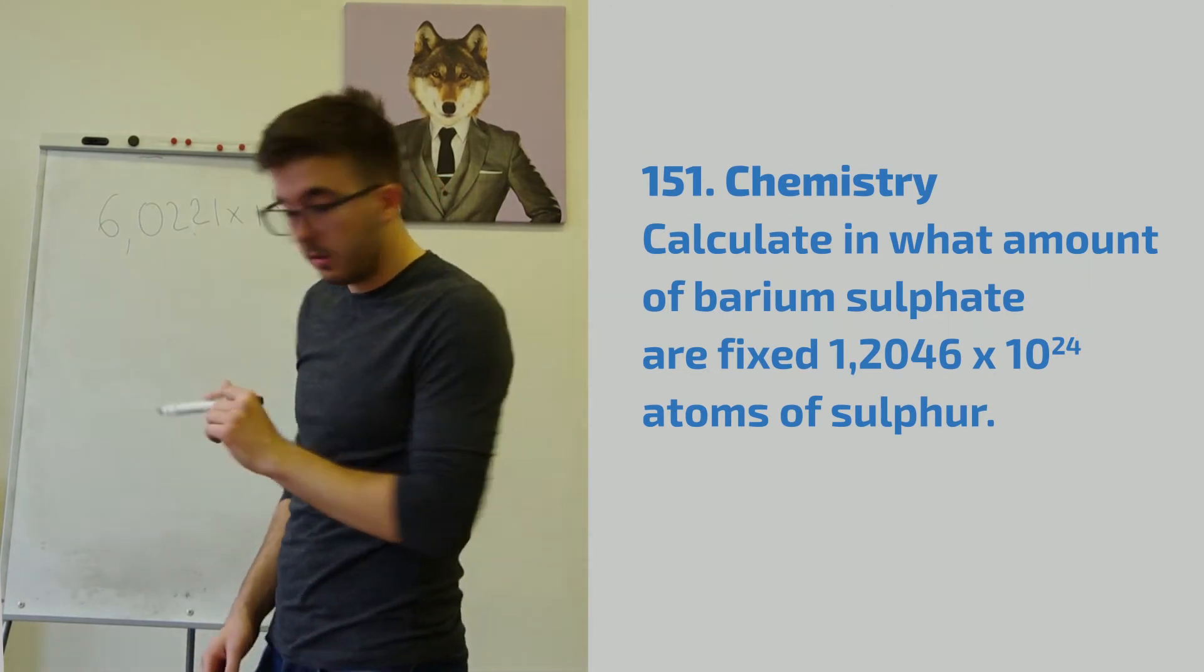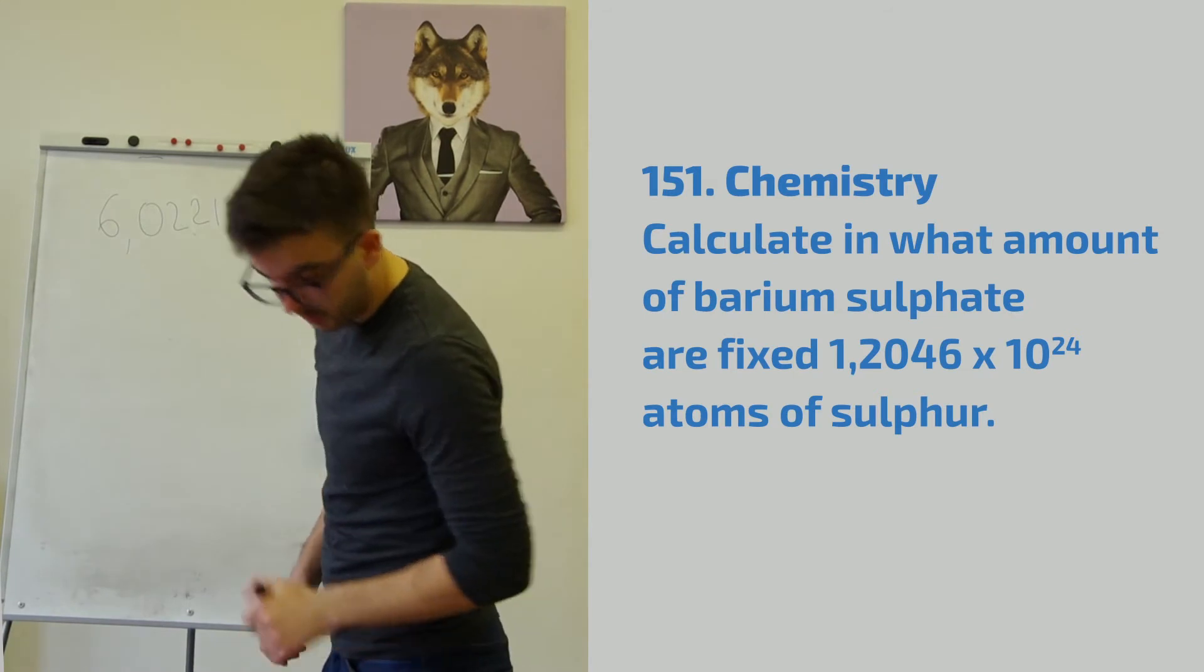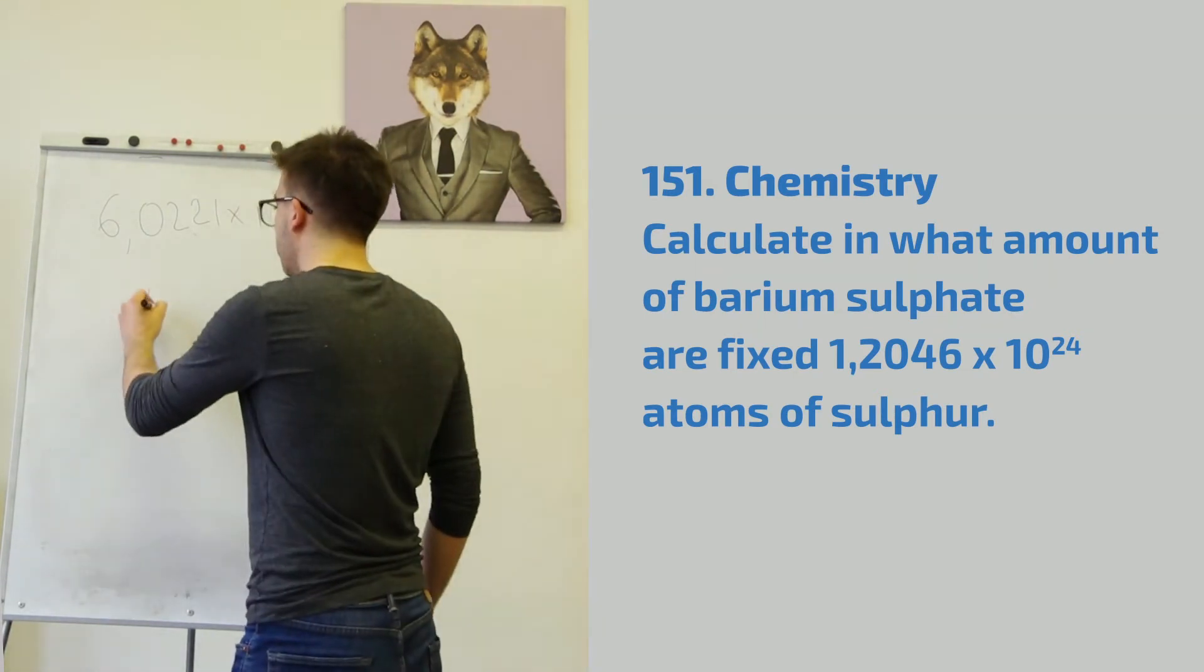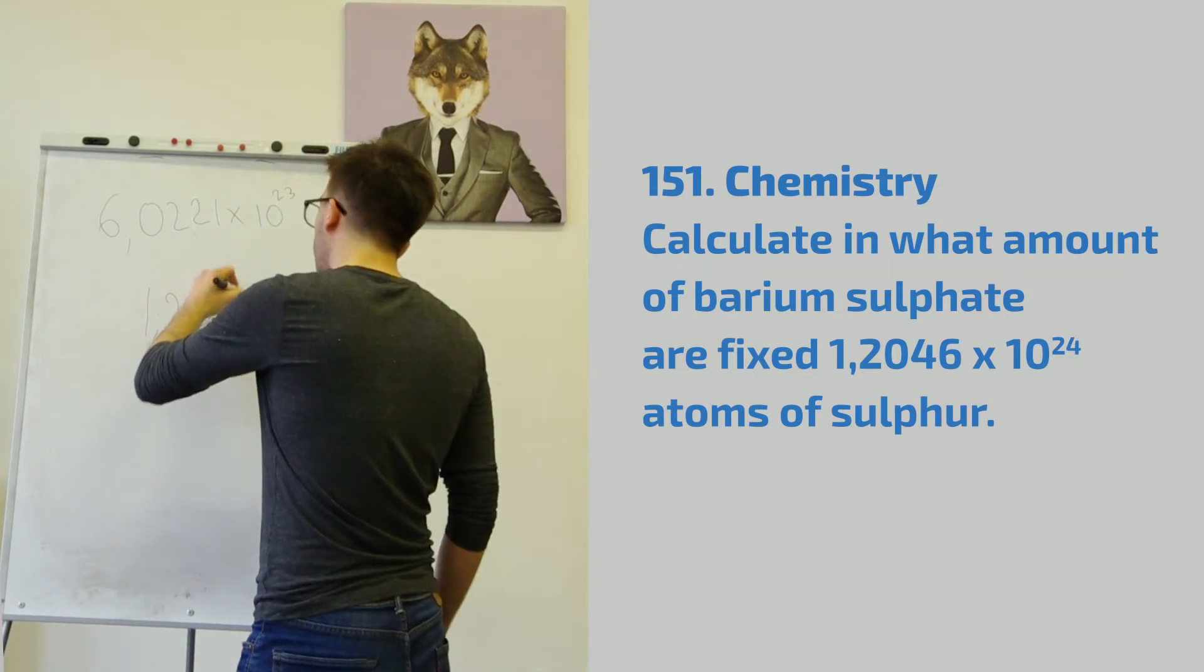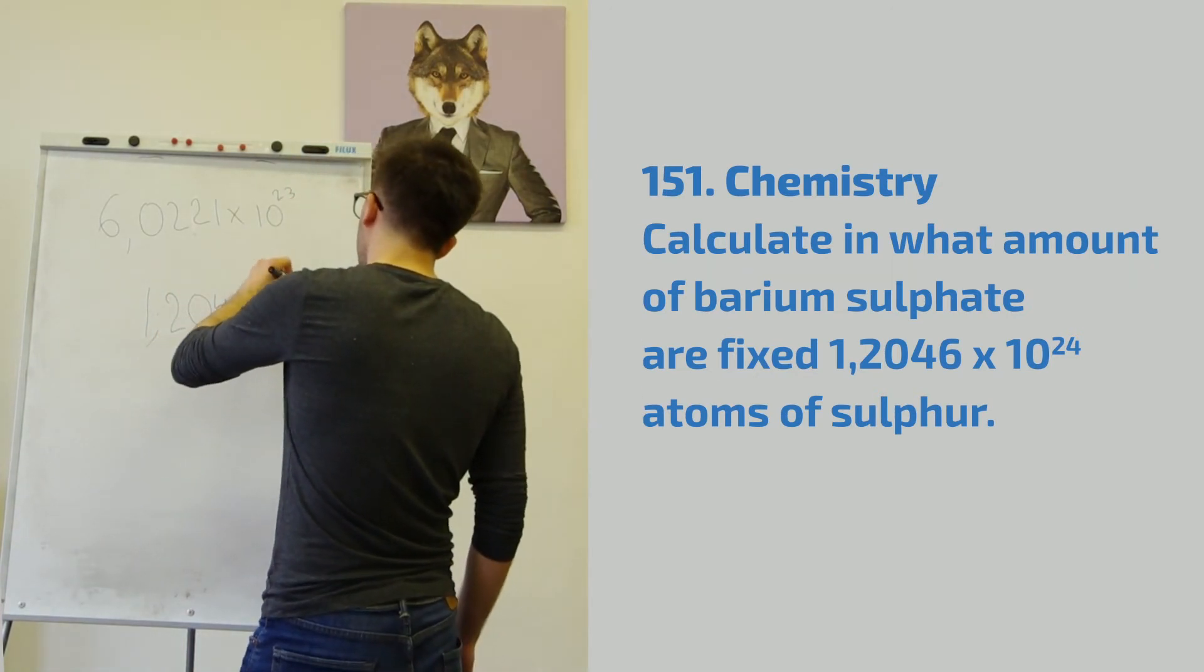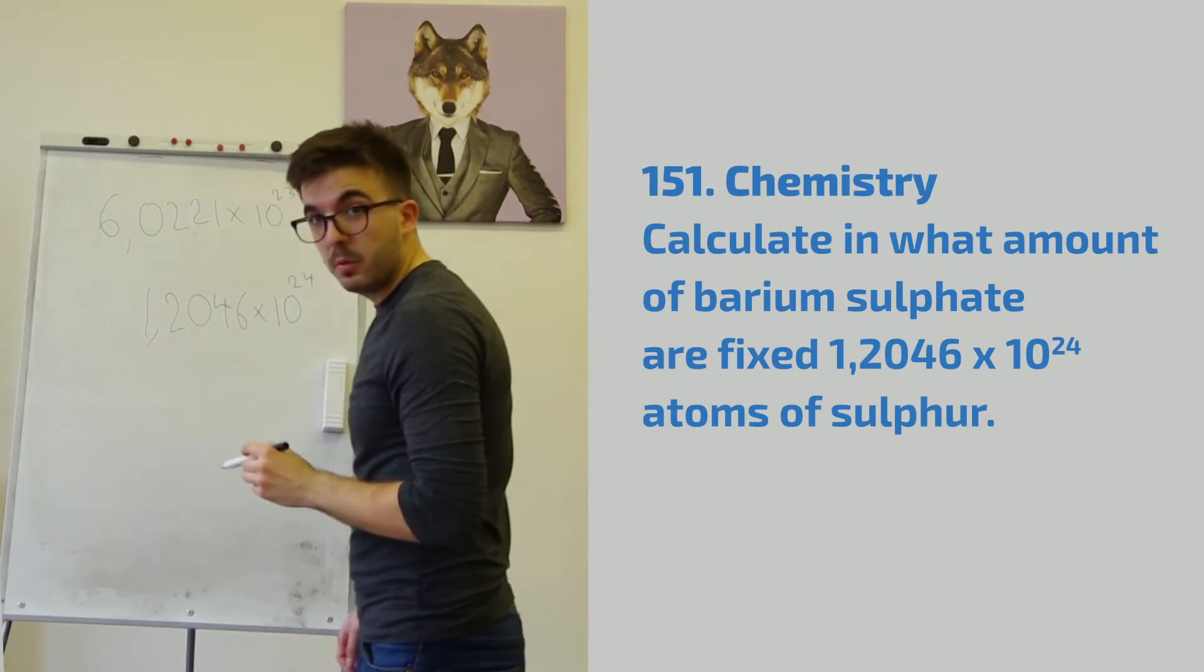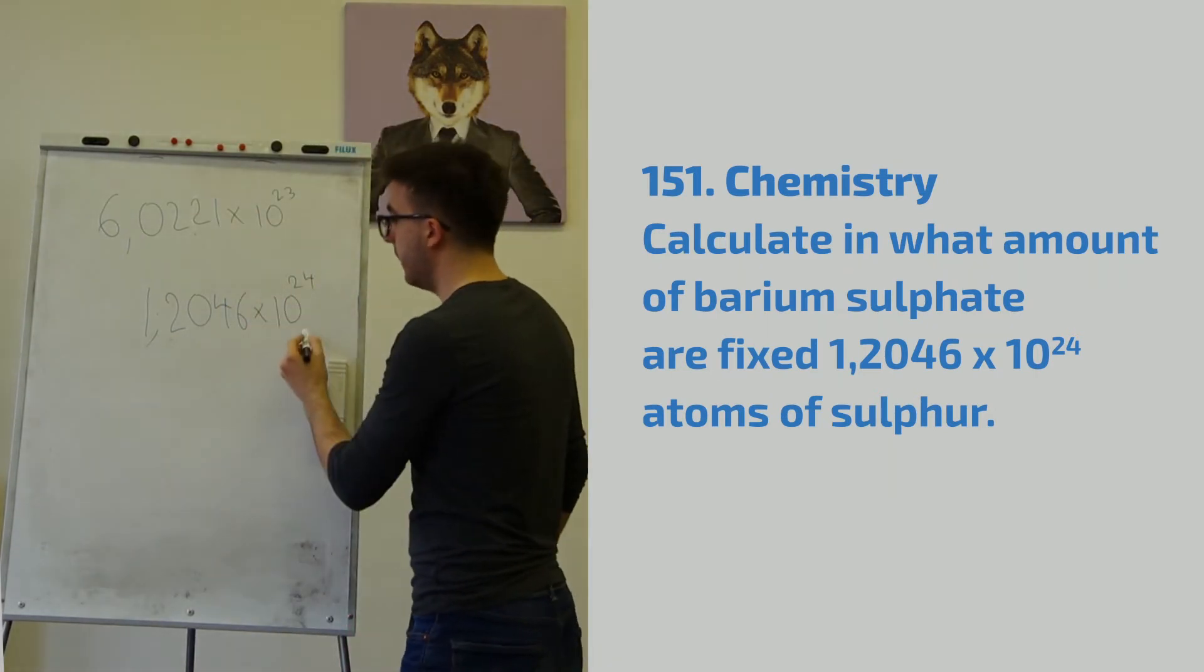So since we have the number of units, which was 1.2046 times 10 to the power of 24, all we need to do is divide this number by Avogadro's number.